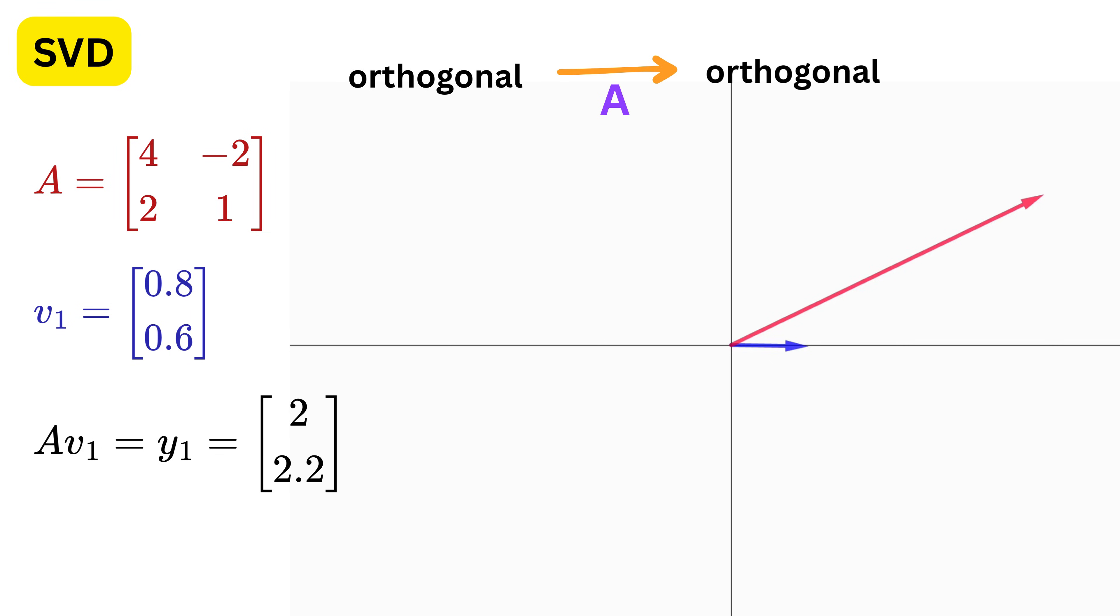One way we can do this is by considering another vector, V2, which I will show using this blue color vector, such that it will be orthogonal or perpendicular to V1. Once we have these two perpendicular vectors, we can transform both of them using A,